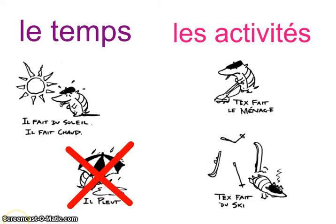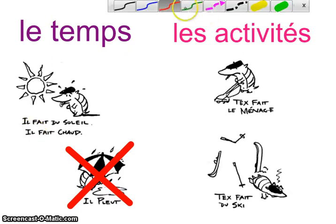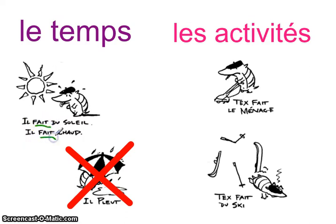Nous avons déjà vu, already seen, le verbe faire dans beaucoup de situations. Par exemple, en français nous avons le temps. Et notre question quotidienne : quel temps fait-il? Il fait du soleil. Alors, ici nous avons déjà vu le verbe faire en pratique.